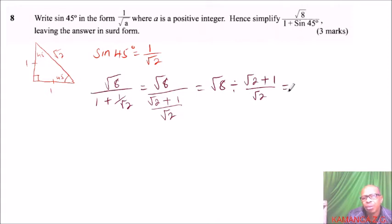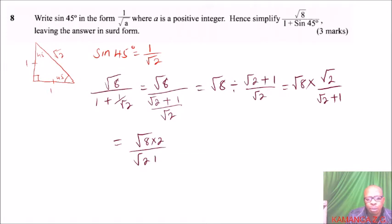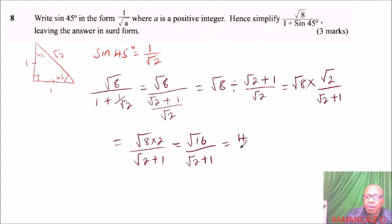You note here — when you do that, it is root 8 multiplied by — you change the division to multiplication and write the inverse of this. So this is root 2 divided by root 2 plus 1. You can combine this: it equals the square root of 8 multiplied by 2, divided by root 2 plus 1, which equals root 16 divided by root 2 plus 1. So this gives 4 divided by root 2 plus 1.